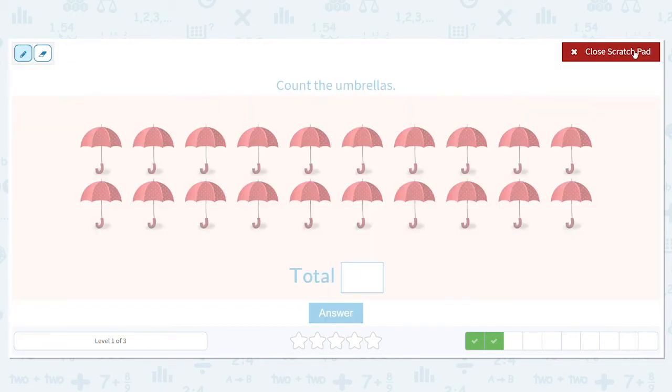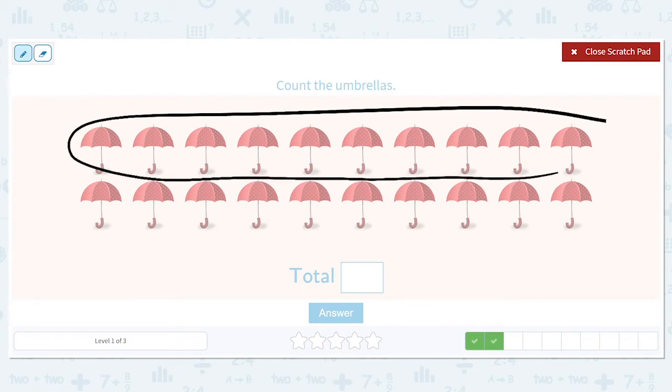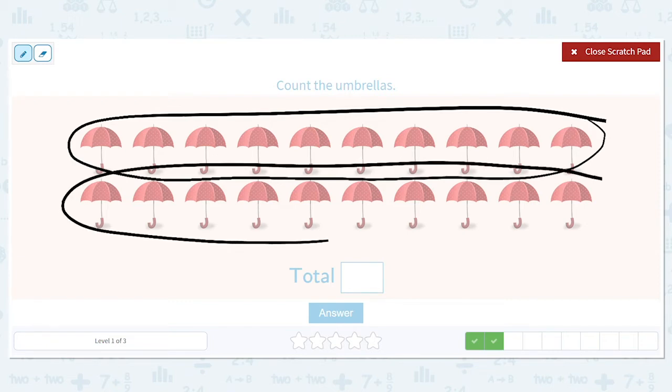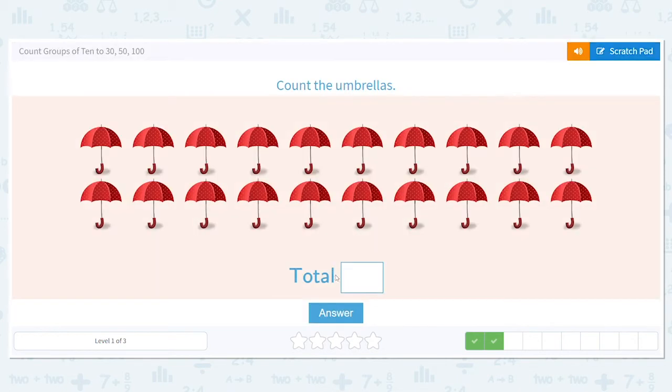Go ahead and circle that row of 10 umbrellas up here. And then the row of 10 umbrellas down at the bottom. And let's count by tens. We have 10 and another 10 makes 20. So what's our total number of umbrellas? Go ahead and say it. 20. We have 20 umbrellas. Good job.